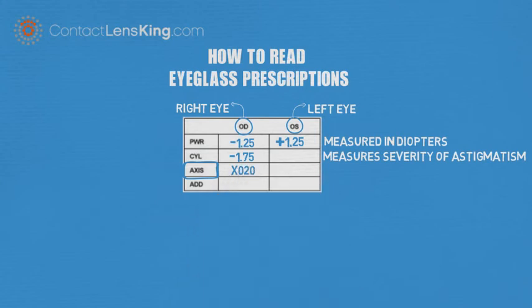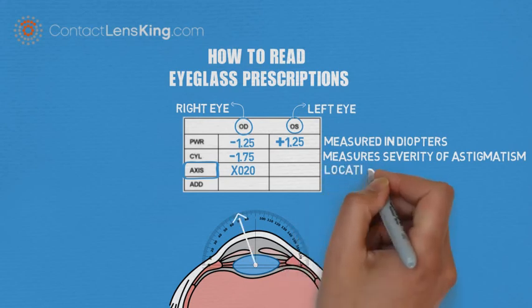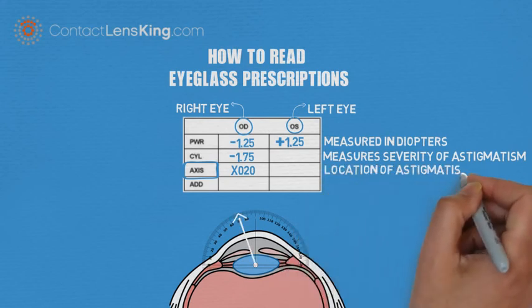Axis. The axis is only used for astigmatic prescriptions. It provides the exact location of the astigmatism in the eye.